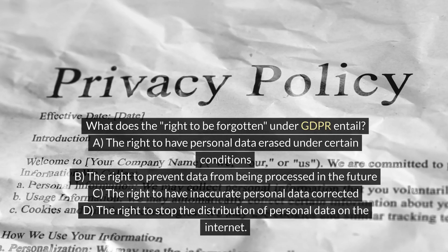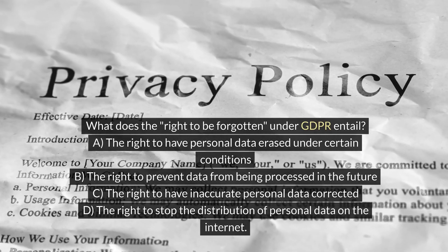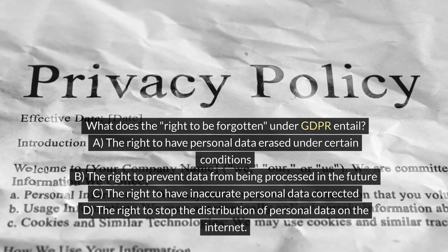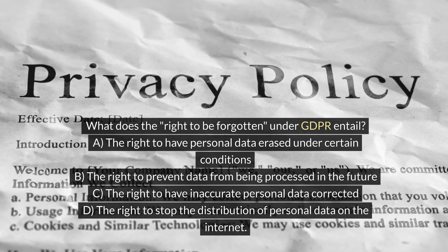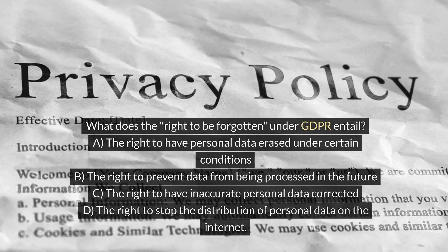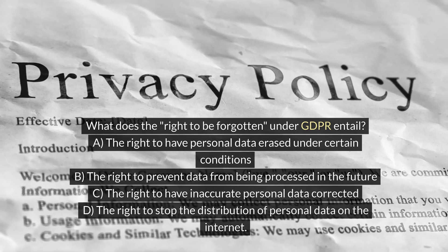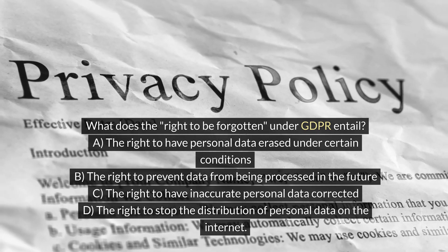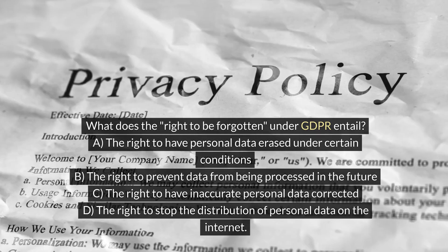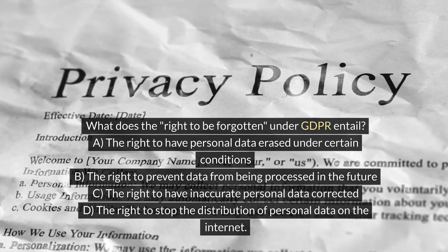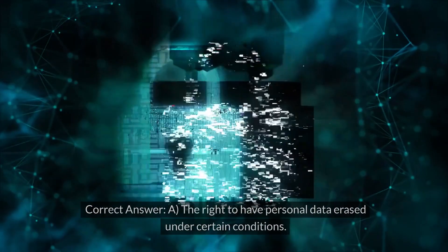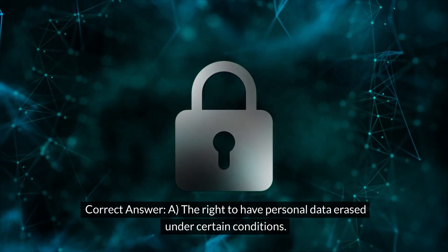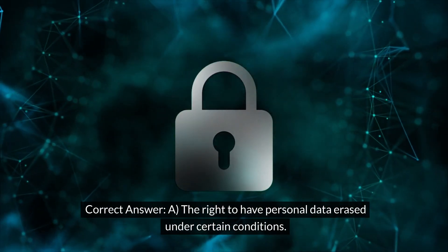What does the right to be forgotten under GDPR entail? A. The right to have personal data erased under certain conditions. B. The right to prevent data from being processed in the future. C. The right to have inaccurate personal data corrected. D. The right to stop the distribution of personal data on the internet. Correct answer: A. The right to have personal data erased under certain conditions.